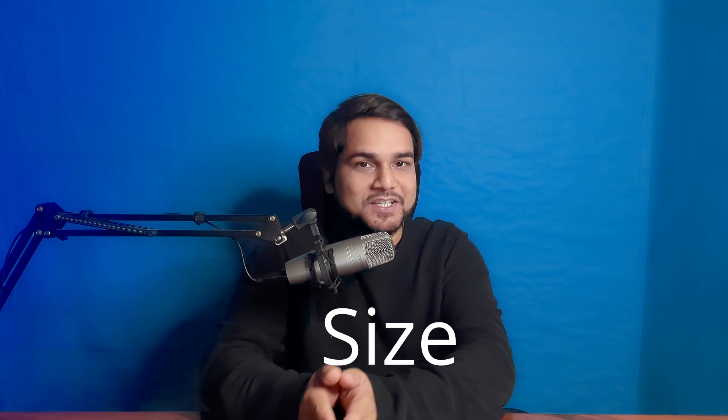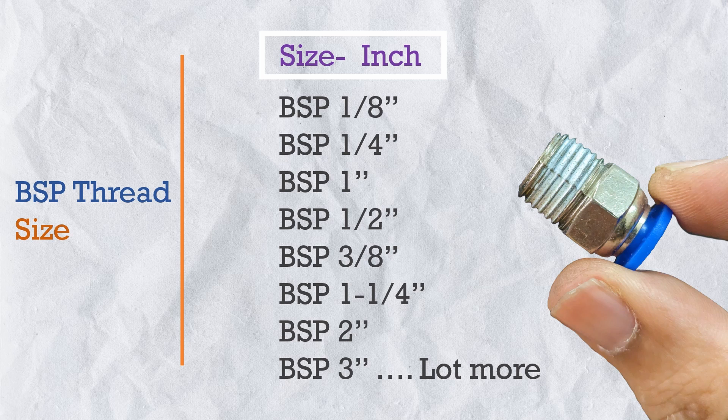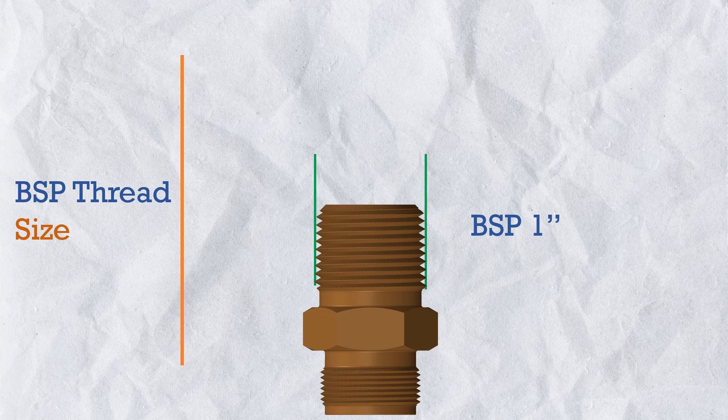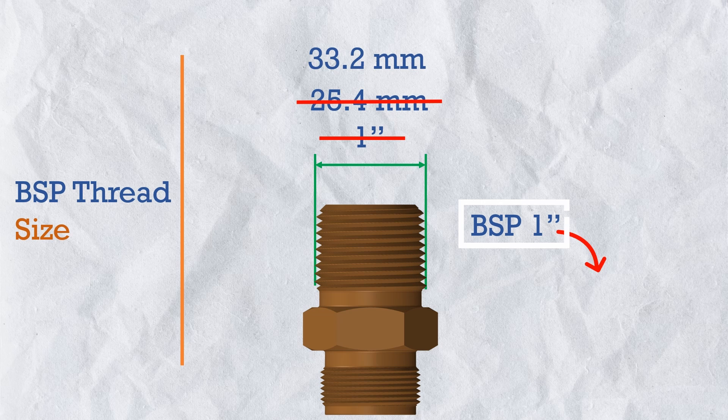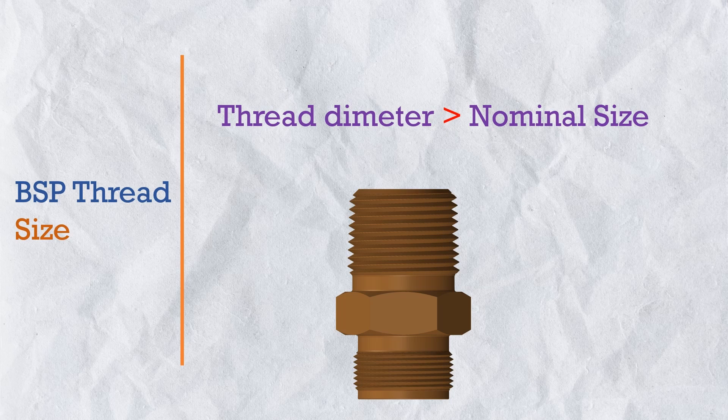The first thing is the size of BSP thread. We define BSP thread sizes in inches like 1/8 inch, 1/4 inch, 1 inch, or 1/2 inch. But these inches are not the diameter of the thread. For example, a 1 inch BSP thread doesn't mean the thread diameter is 1 inch or 25.4 mm — it's actually 33.2 mm. This is just a nominal size: a reference number, not a physical dimension. In BSP thread, the thread diameter is always larger than the nominal size, and this nominal sizing in inches comes from historical legacy.